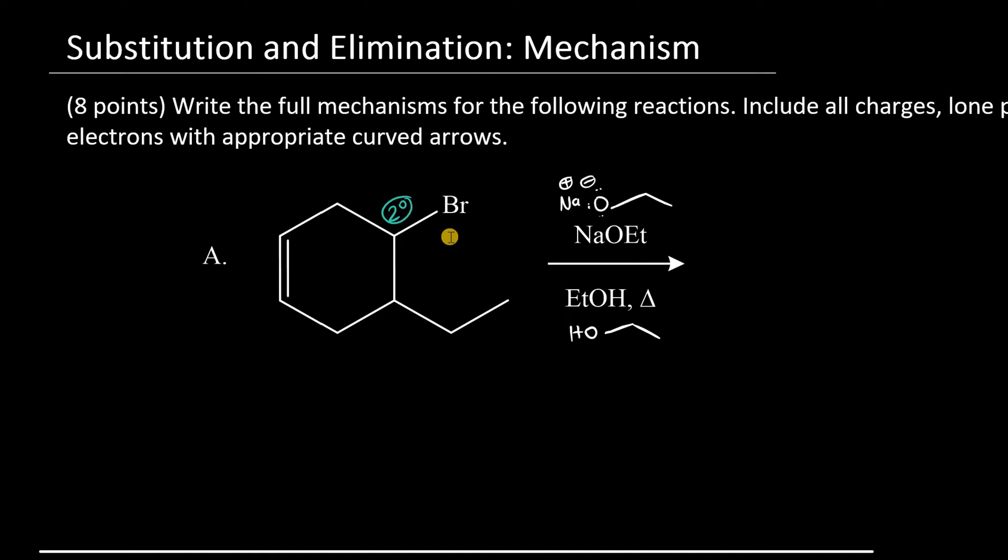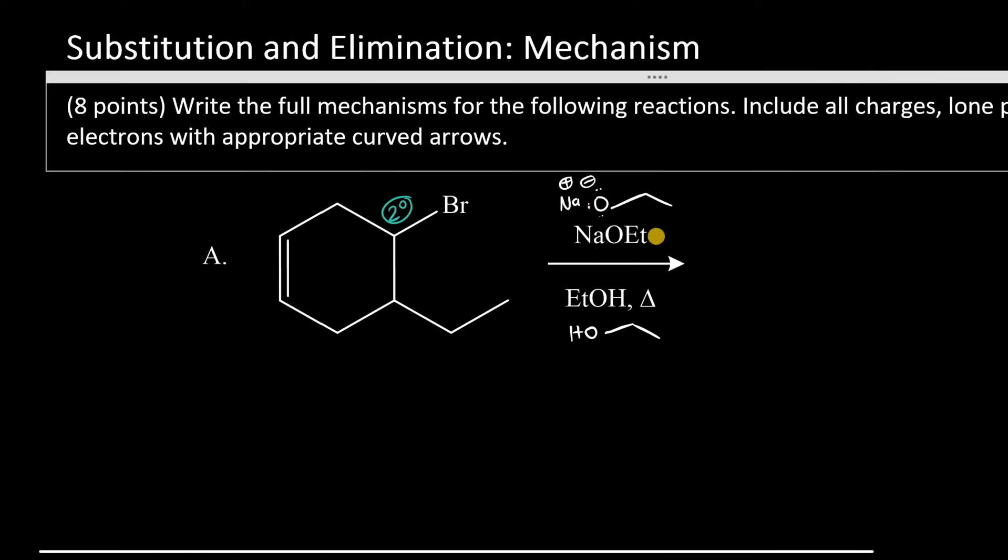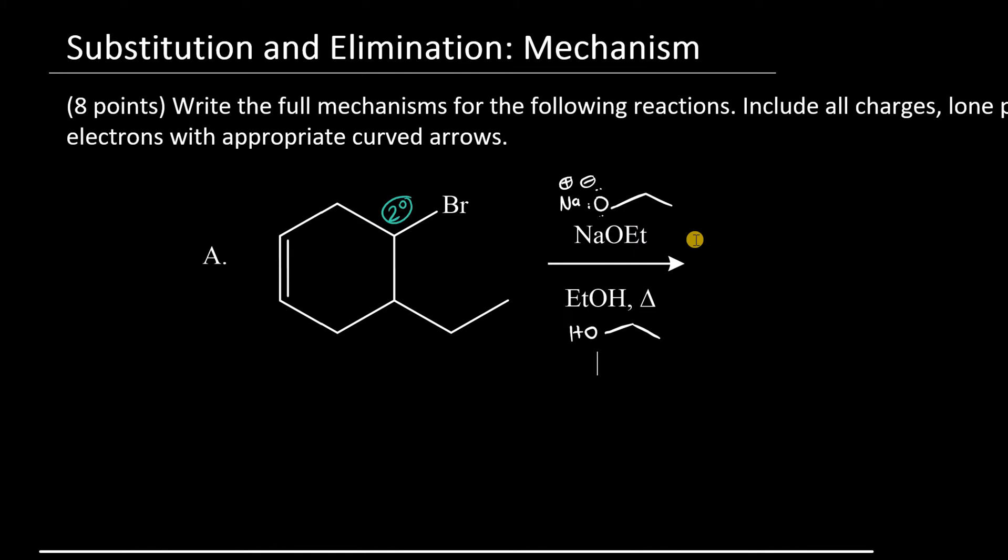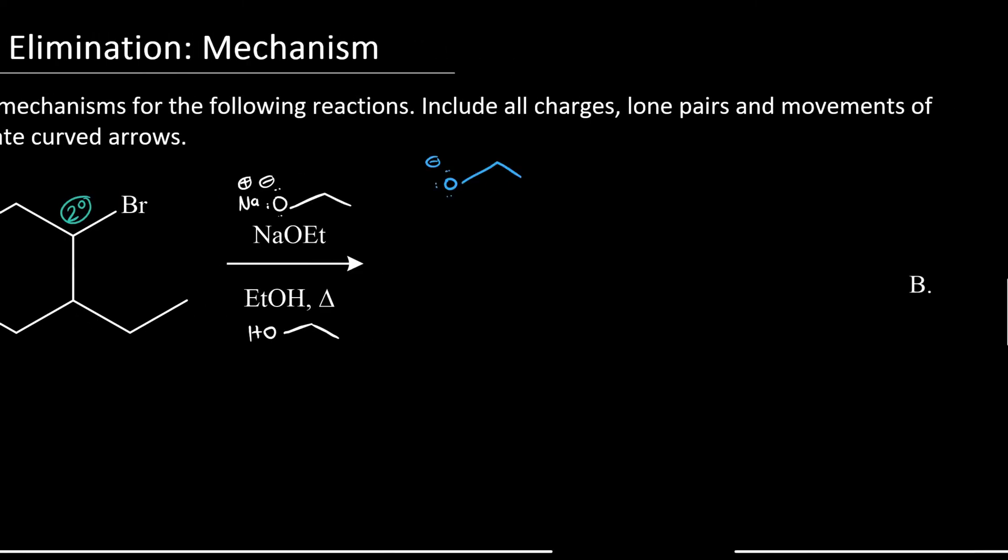Now, the question is, is this an E1 or E2 pathway? Well, we have a very strong base here. The way to determine that is to first estimate the pKa of the conjugate acid. The conjugate acid of ethoxide is ethanol, which is used as the solvent. And the pKa of ethanol is close to 16. This is the criteria for any strong base or strong nucleophile.